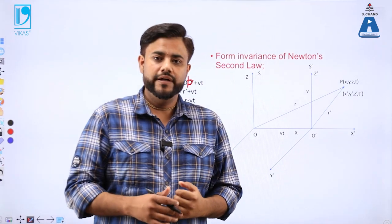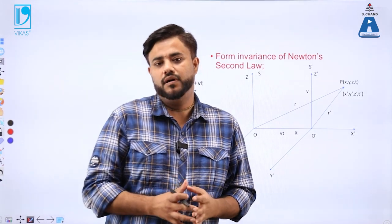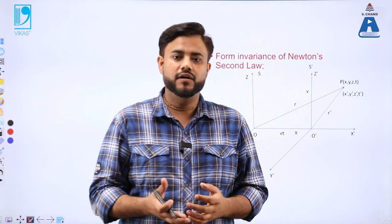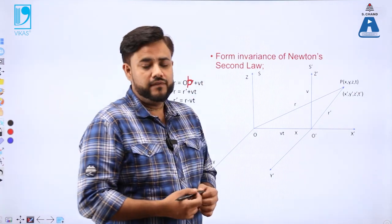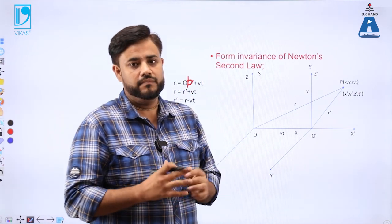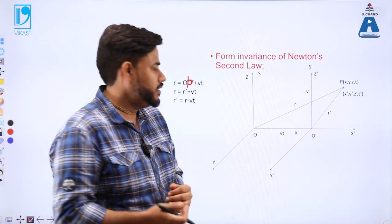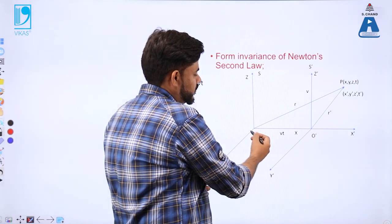Welcome back to S.Chan Academy. Before the break, we were deriving the form invariance of Newton's second law of motion. In this part we will continue the same derivation. We had defined the change of reference frame from O (axes OX, OY, OZ) to O dash, with the particle having coordinates (X, Y, Z, T).